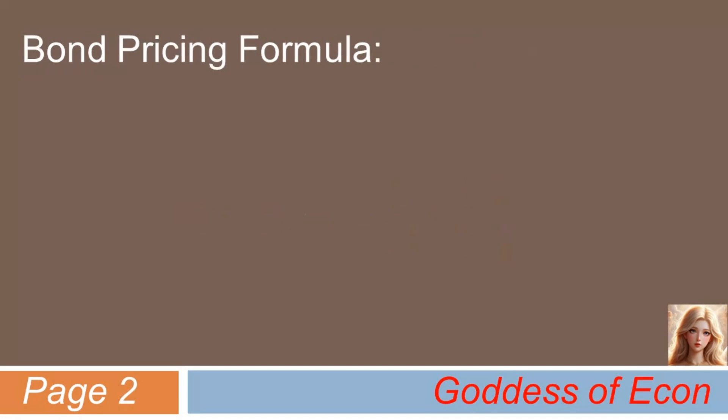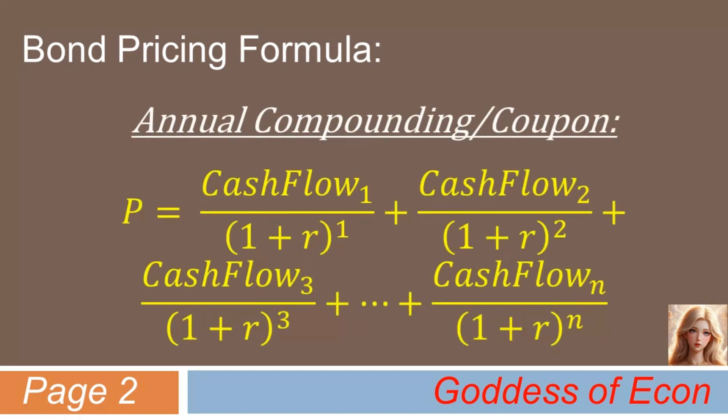Let's start with a bond pricing formula every student must be familiar with by now. If we assume annual compounding and annual coupon, the formula will look like the following. This basically shows that the price of a bond equals the sum of the discounted values of annual cash flows up to the maturity date. And here, of course, n equals the time to maturity expressed in years.